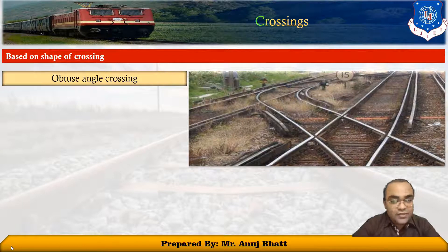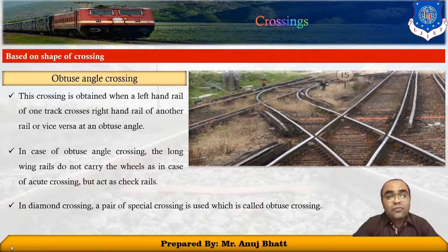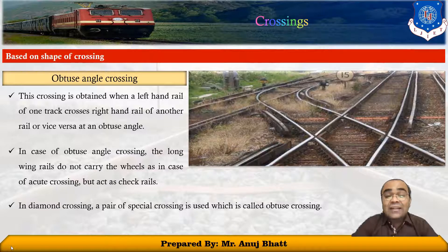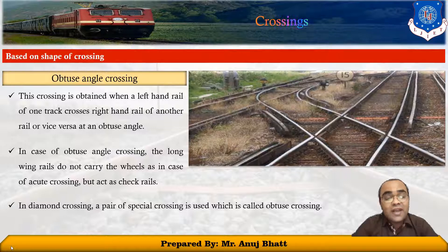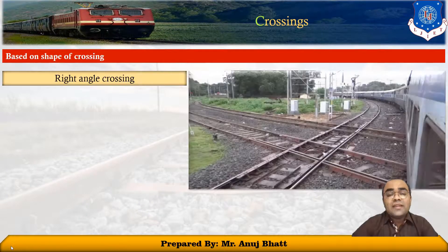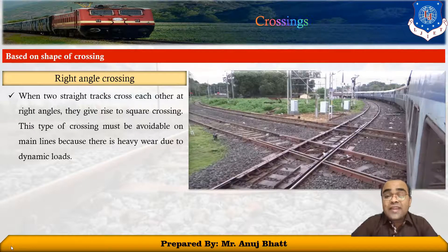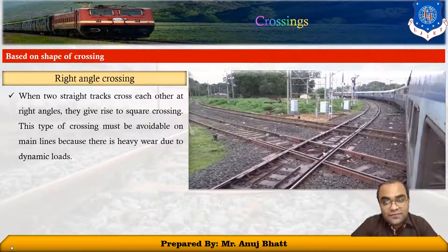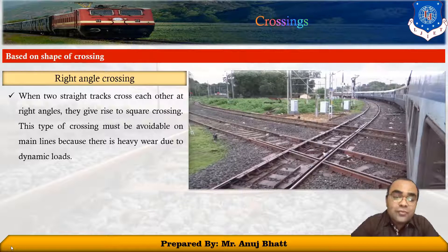In an obtuse angle crossing, a left-hand rail of one track crosses the right-hand rail of another rail at an obtuse angle. In the case of obtuse angle crossing, the long wing rail does not carry the wheels as in acute crossing but acts as check rails. In a diamond crossing, a pair of special crossings called obtuse crossings is used. In a right-angle or square crossing, two straight tracks cross each other at right angles. This type of crossing must be avoided on main lines because there is heavy wear due to dynamic load.